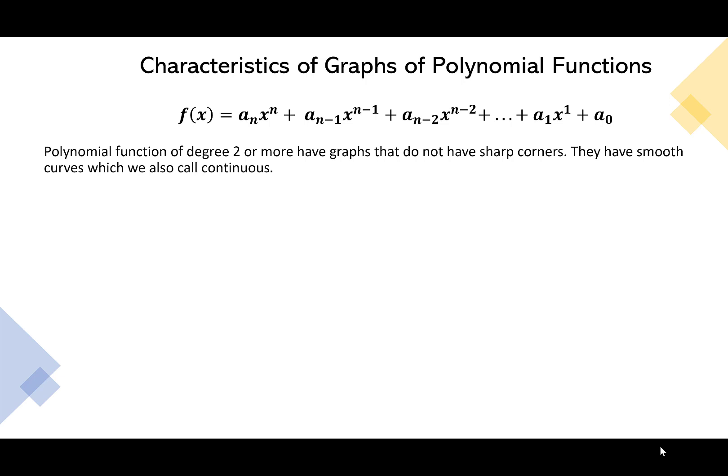A polynomial function looks like f(x) = a_n · x^n + a_(n-1) · x^(n-1), continuing down to a₁x plus a₀. Important here is that all of these exponents are integers that are greater than or equal to 0 — no fractional exponents, no negative exponents, just nice whole numbers. The coefficients a can be any real number. This is the expanded form of how to write a polynomial.